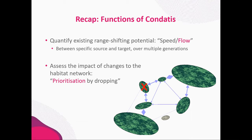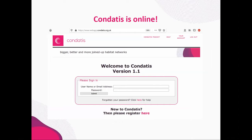Condatus does one big thing: it takes your landscape and quantifies the existing range-shifting potential — that multi-generation connectivity we call speed. That speed can be broken down into the flow within each cell to highlight key routes, and then you can assess the impacts of changing the habitat network, whether from habitat destruction or future habitat creation. Condatus is also online — we released the web application just over a year ago and users report it's much easier and faster to use. You can analyse bigger landscapes than the old version without issues of downloading software or limited computing power. The latest version, released in early 2020, has additional features that users have been asking for.